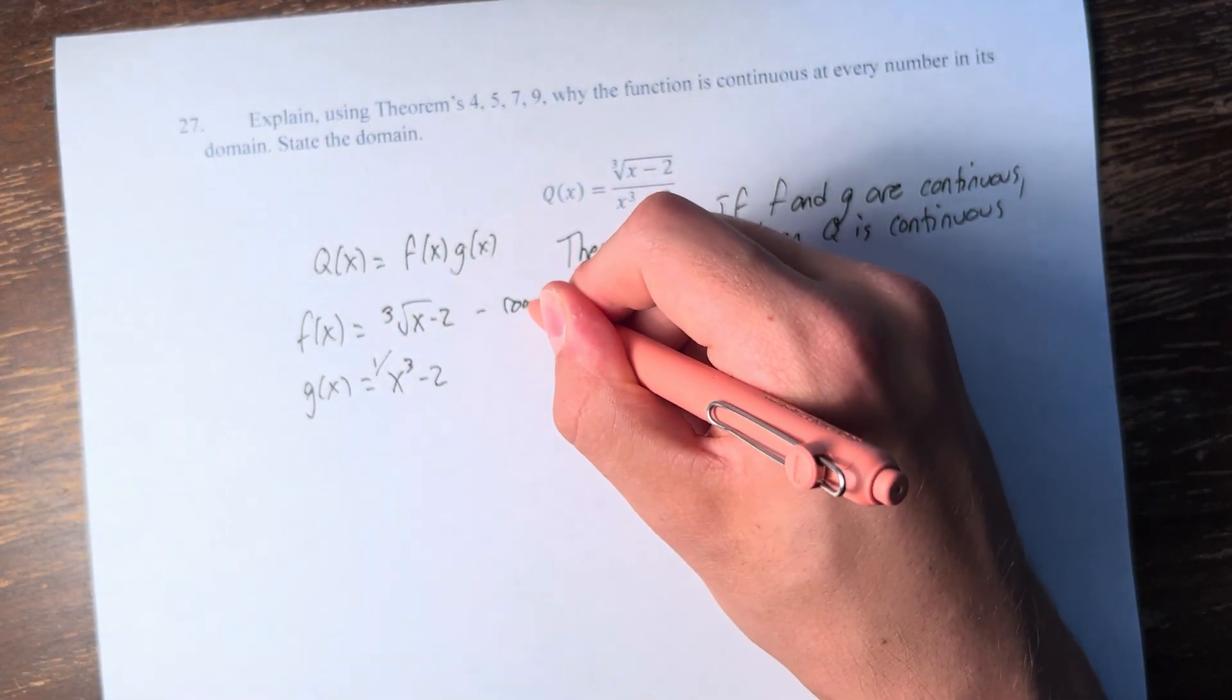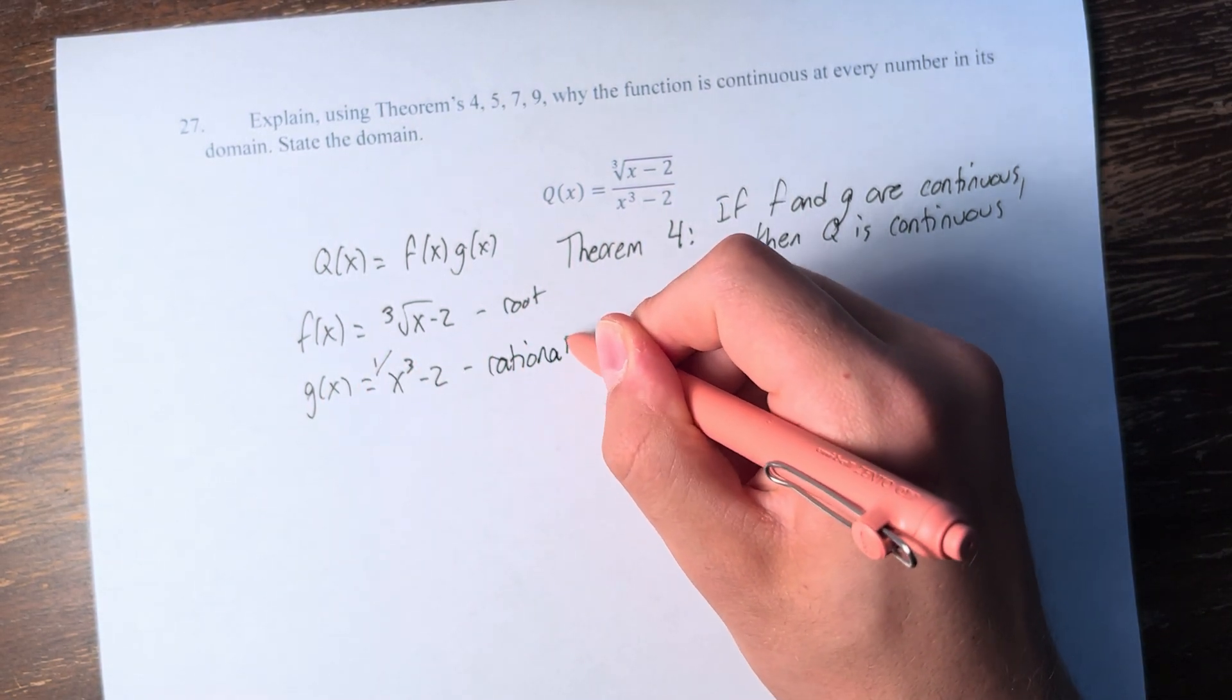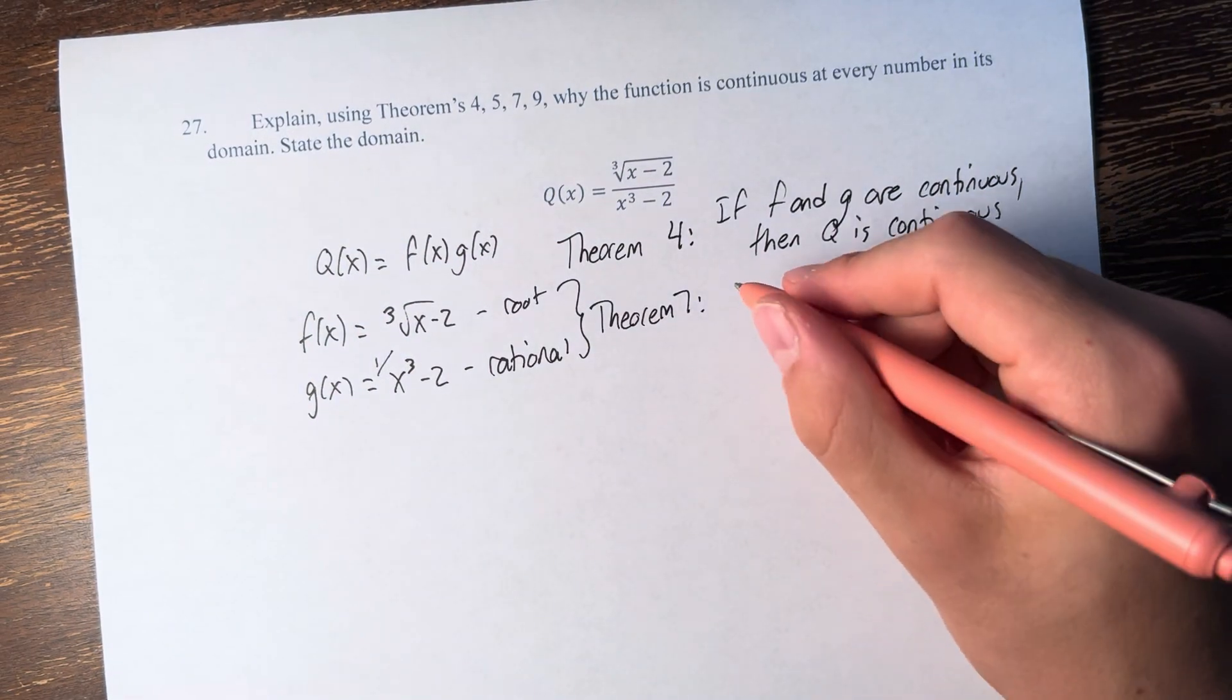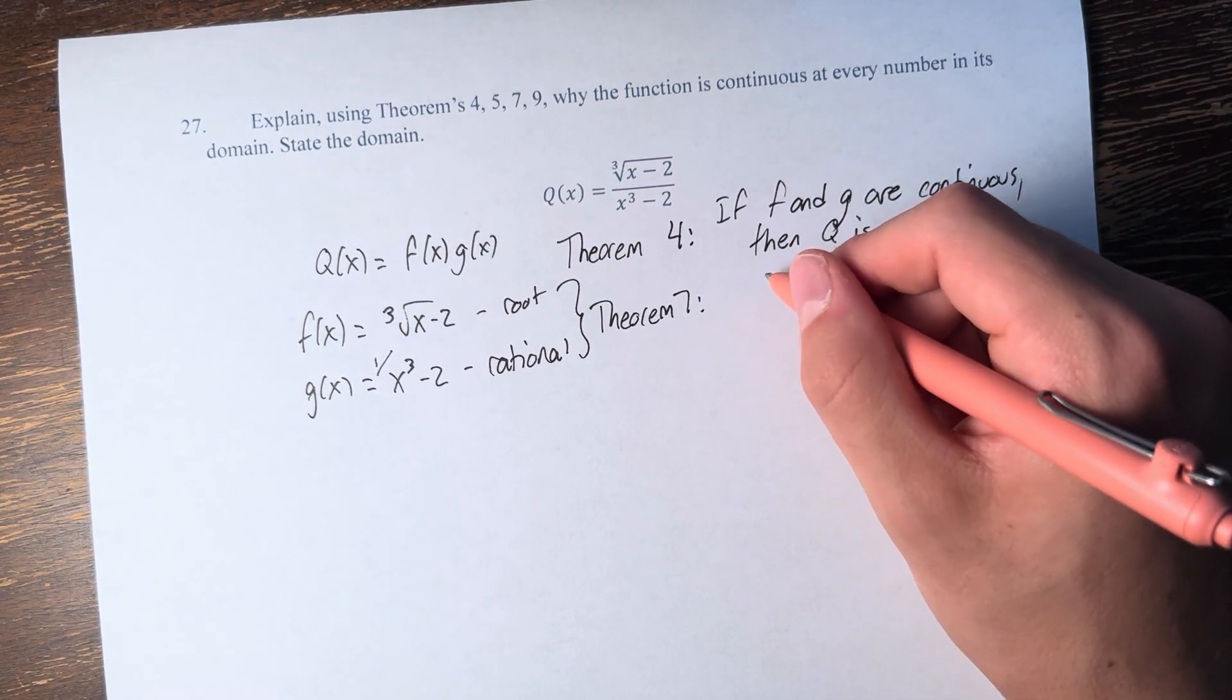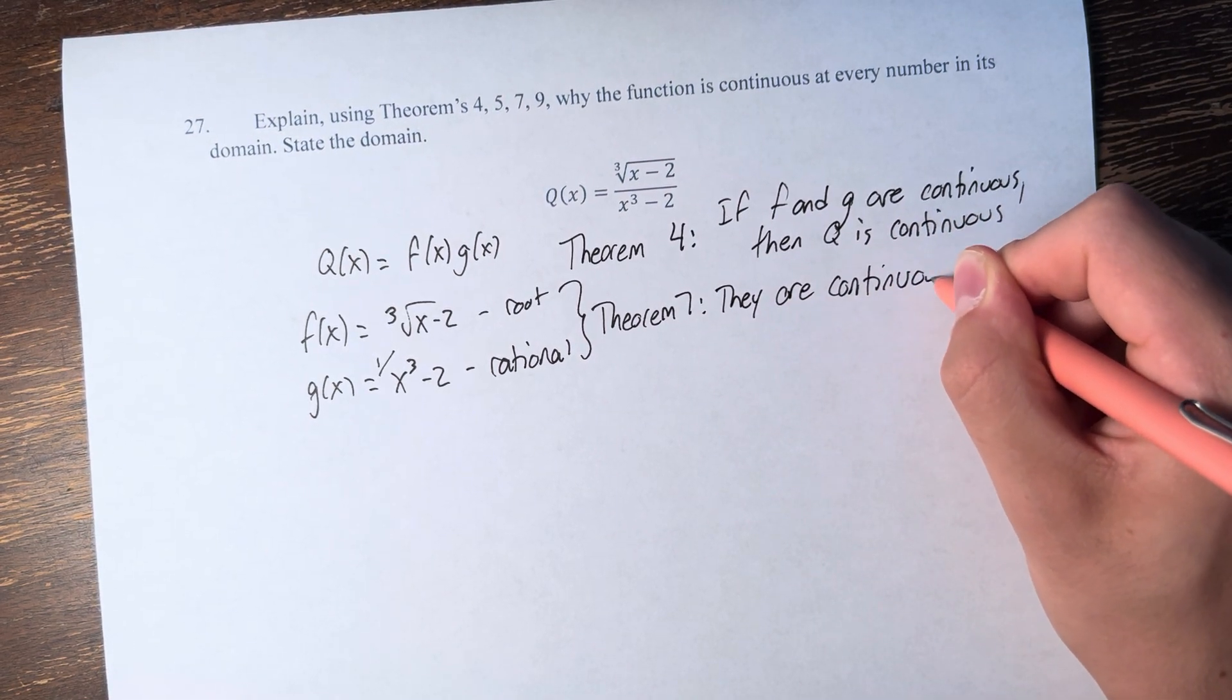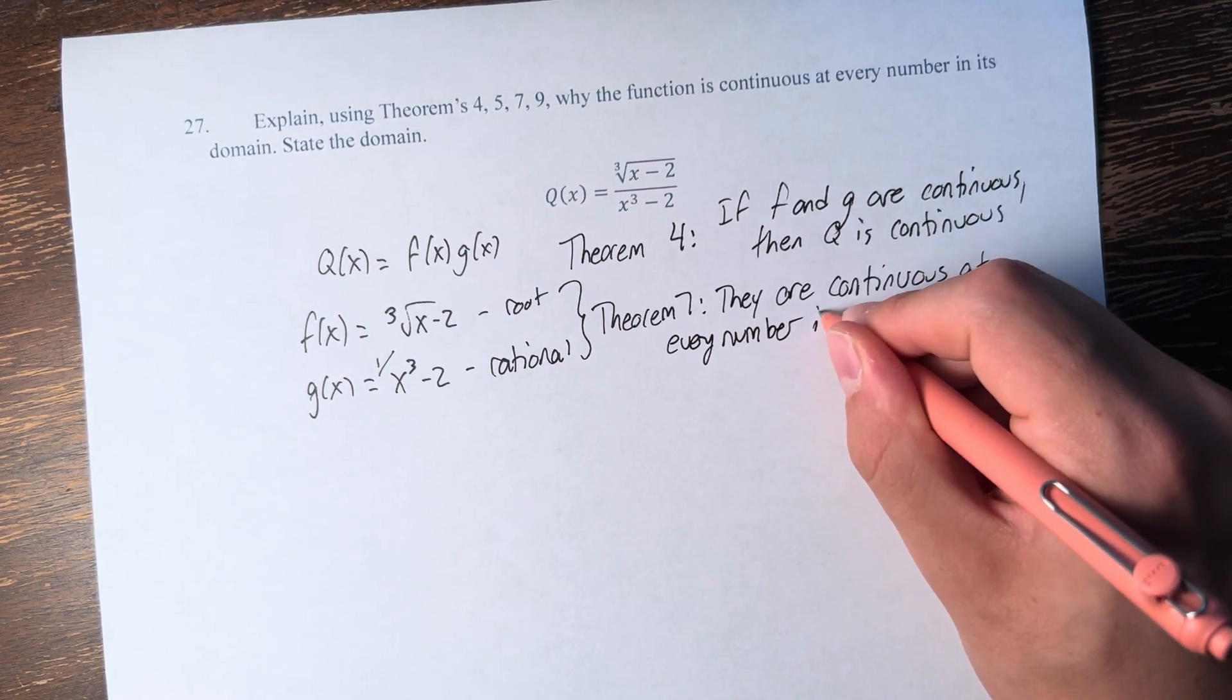f is a root function. g of x is a rational function. Therefore, by theorem 7, f and g individually are functions for which they are continuous at every number in their domain.